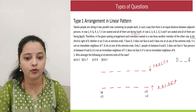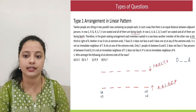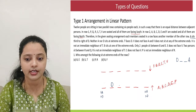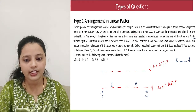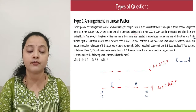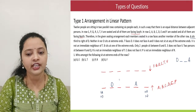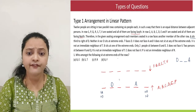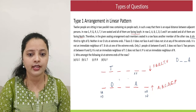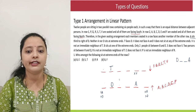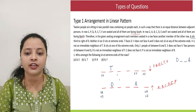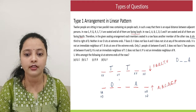T faces D. So I will fix D at the second position, with two people between D and A, making A the fifth position. If D were at position 3, A would fall at the extreme end — not allowed. So the only valid case is D at position 2 and A at position 5. T then faces D, so T is placed opposite D. V does not face A — so the place opposite A is not V. V does not sit at any extreme, and V is not an immediate neighbor of T. The only place left for V is the fourth position.